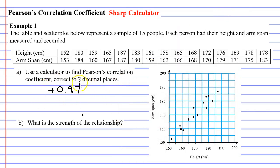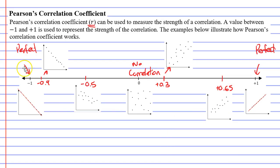What does that mean? What does positive 0.97 mean? Well, if we go back to our number line here, positive 0.97 is very, very close to positive 1. Meaning it's very, very close to being perfect. Not quite perfect. But it's definitely a very strong relationship here.